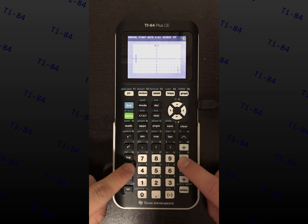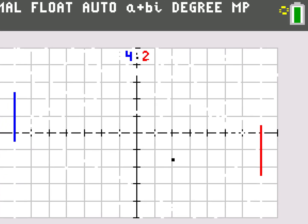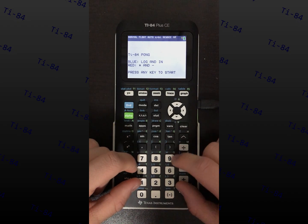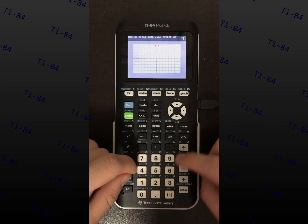The first game I made for the TI-84 is Pong, a two-player game that runs so well that the loading wheel is yellow. Red uses log and natural log, and blue uses times and divide to control the paddle.